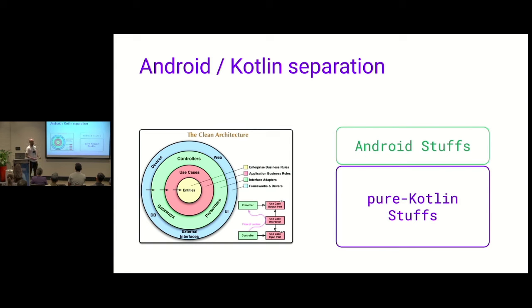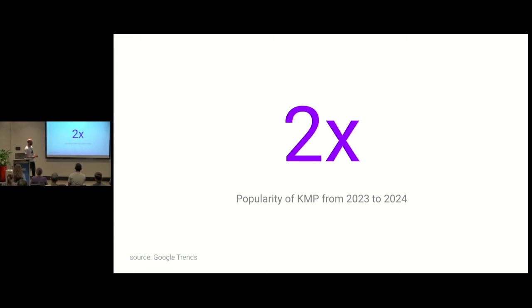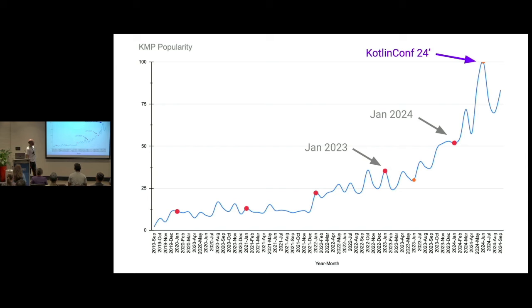This is the only thing you need to remember about Clean Architecture, because it can go in many ways. Since then, Kotlin Multiplatform's popularity has increased a lot — in just the last year it has doubled. As we can see here from Google Trends, the popularity in 2024 during Kotlin Conf was at its peak, more than double from a year before in 2023.